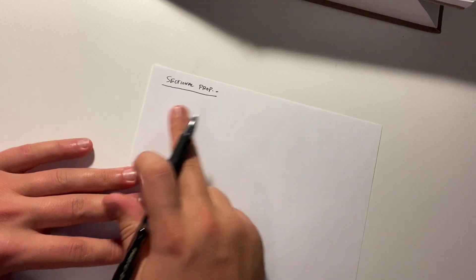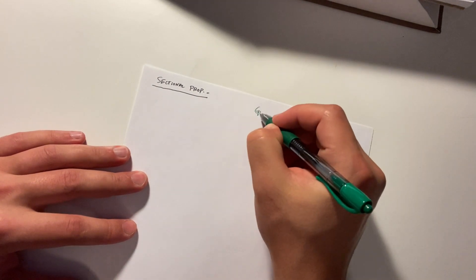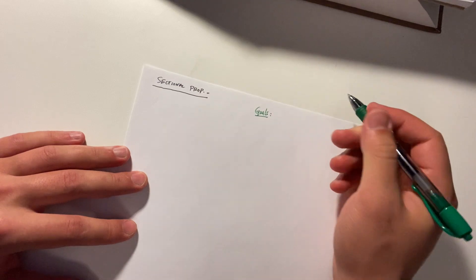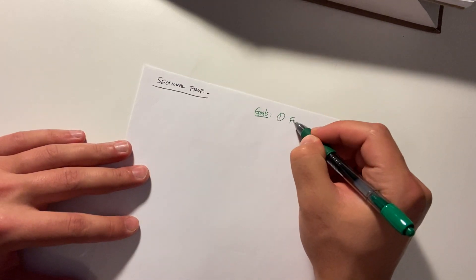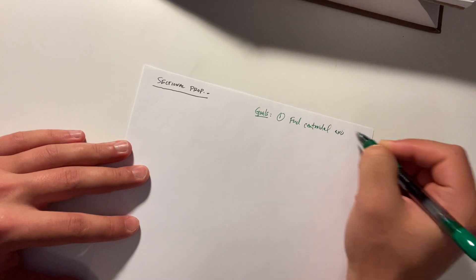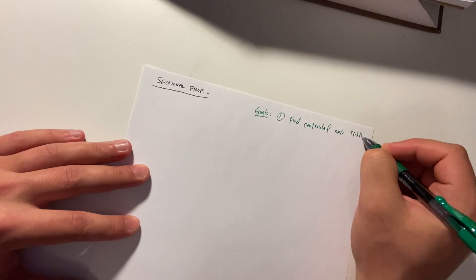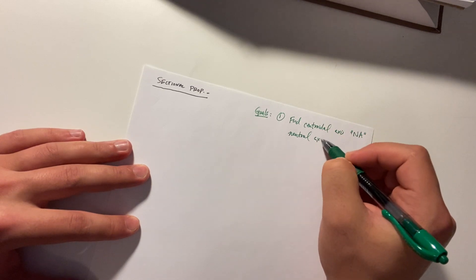This is going to be very important. It's talked about a lot in your statics classes. You're going to need it for design, for analysis, for a lot of things. So our goals today, just to get straight to the point, we want to find the centroidal axis. You might have heard it as the NA, which is the neutral axis.